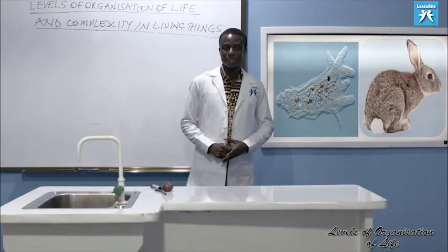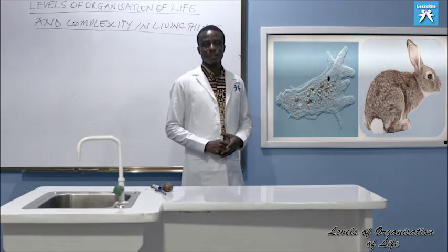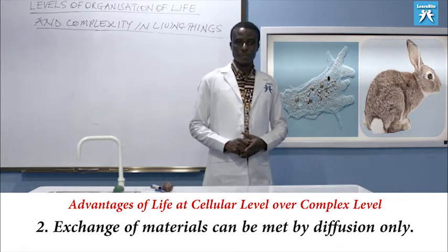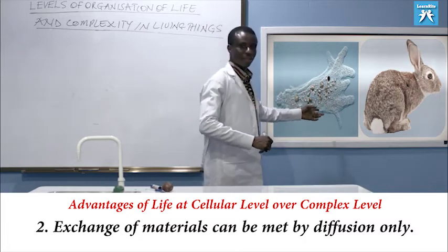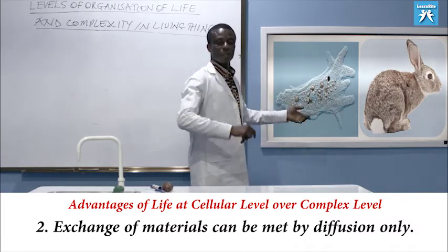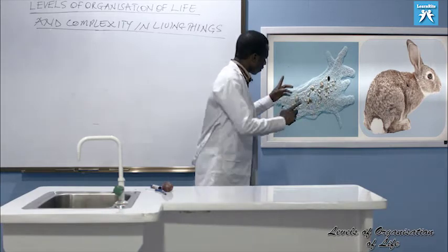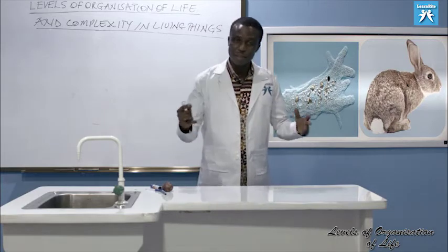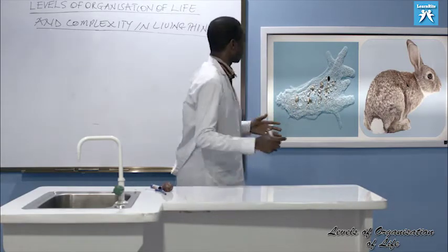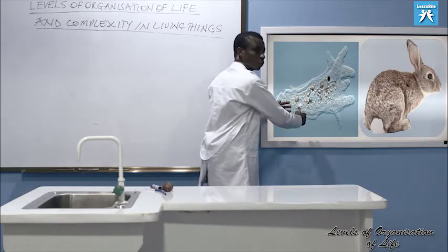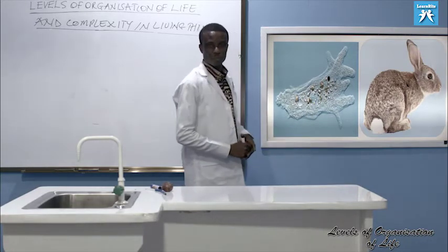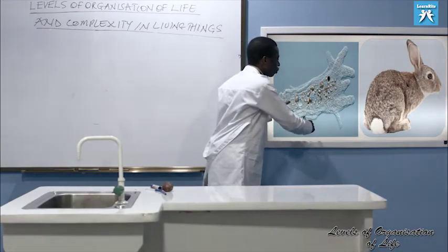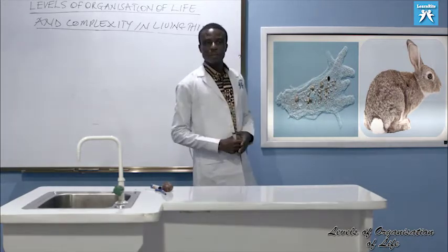Let's look at the second advantage. Exchange of material can be made by diffusion only. It means we don't need a circulatory system, respiratory system, or excretory system. All this diffusion will take care of that. The reason is that there is an increased surface area to volume ratio in the unicellular organism, and the cell is exposed to the environment on all sides.